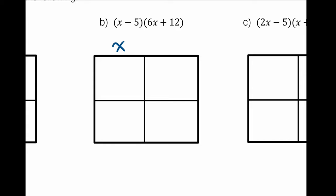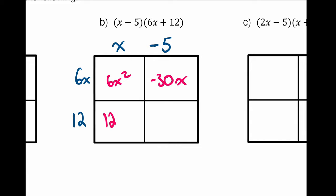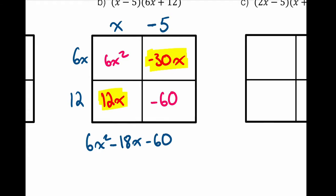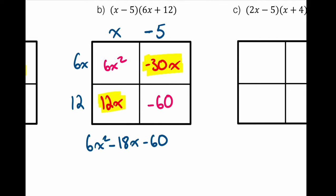Box method example (b). Take one bracket and put it on top — remember to look in front for the sign, so negative 5 goes up there. Put the second bracket on the side. Multiply corresponding columns and rows: 6x times x = 6x squared, 6x times negative 5 = negative 30x, 12 times x = 12x, 12 times negative 5 = negative 60. The two diagonals are like terms, giving 6x² − 18x − 60.